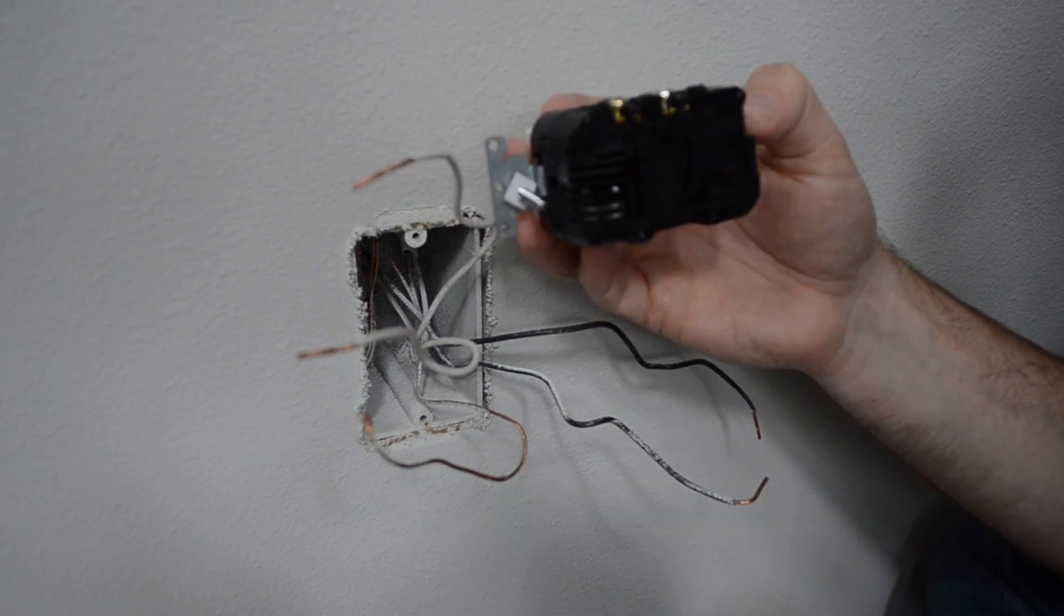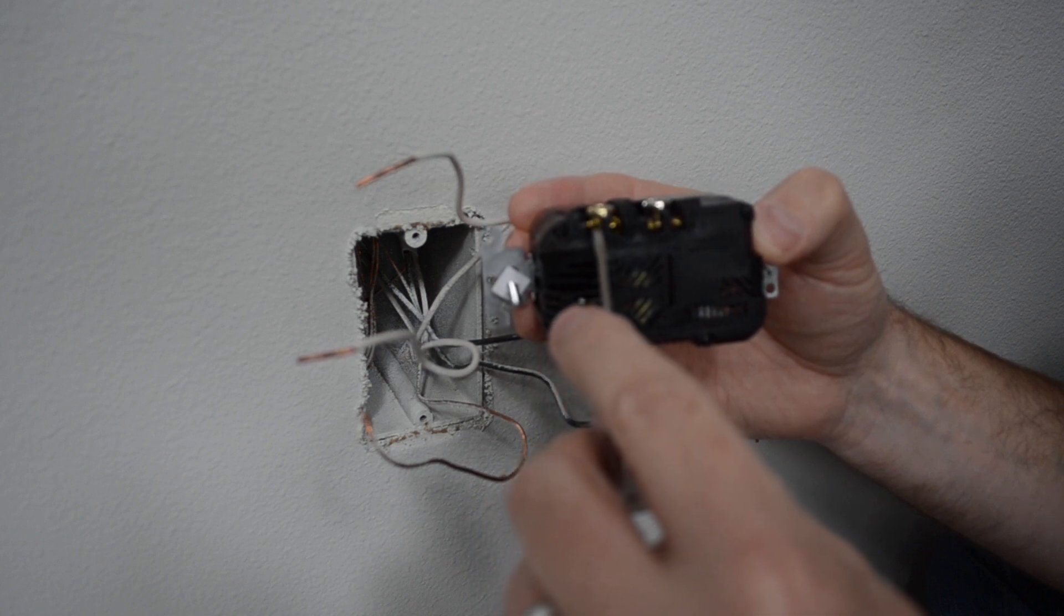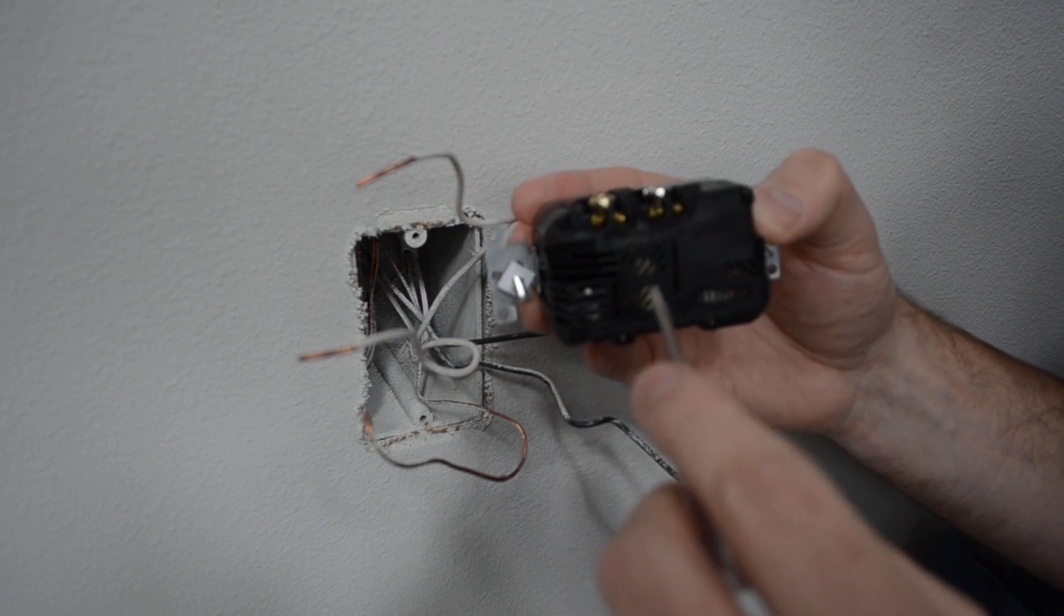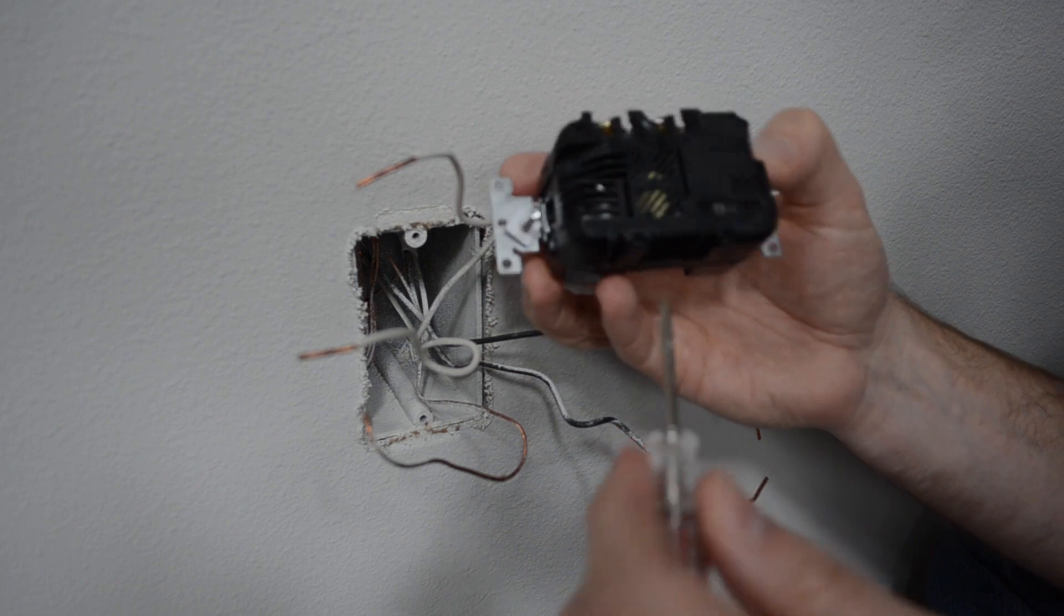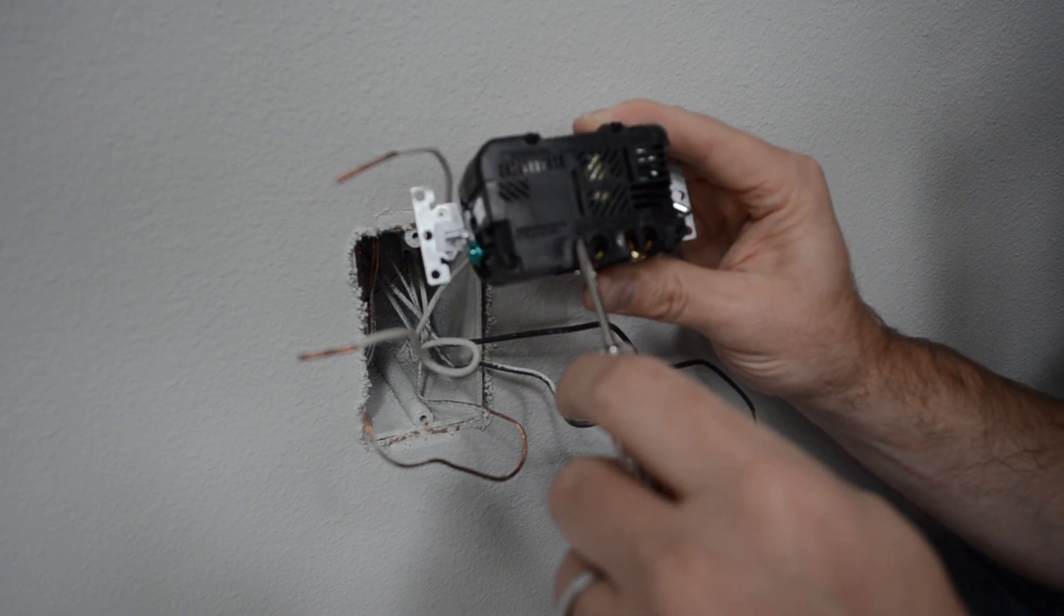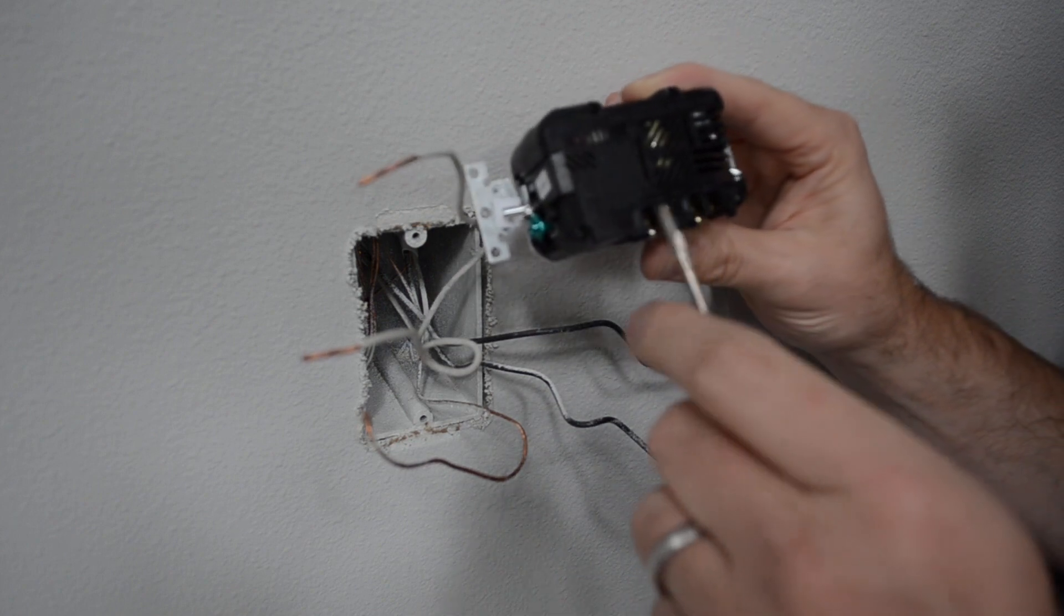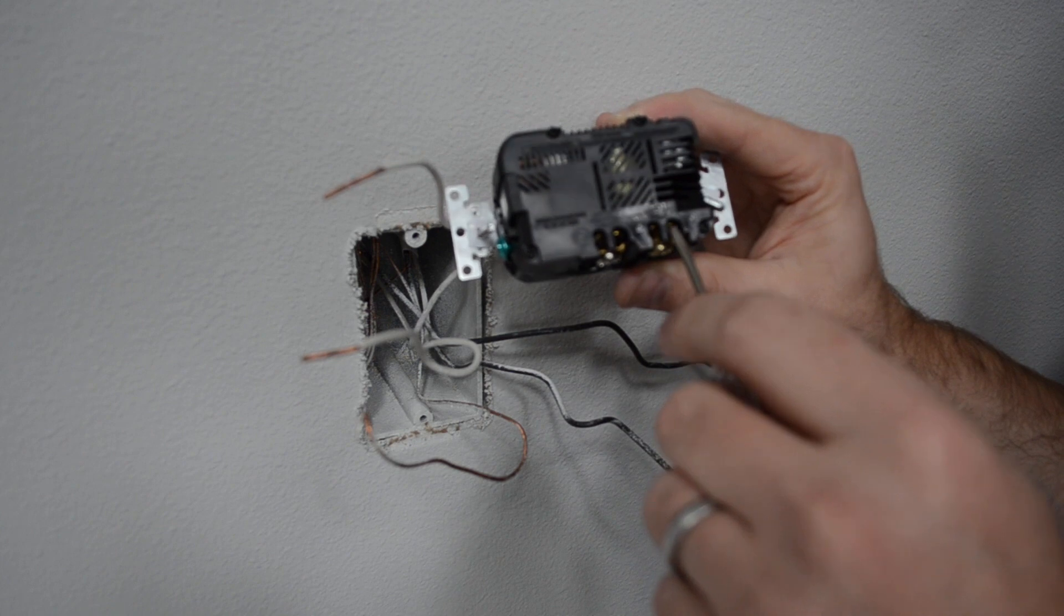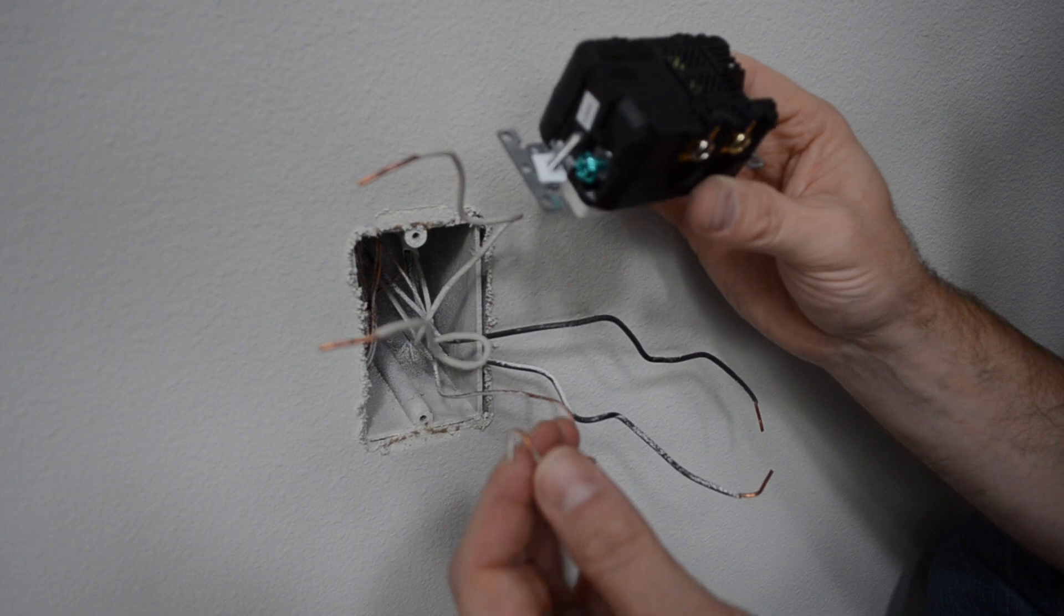And these posts will each accept two wires. There is one, two slots for this post, and one, two slots for this post. So there's two posts that are labeled white and hot. The hot is the black wires. And each of the posts has two little receptacles for the wires. So now I'm going to go ahead and connect them all.